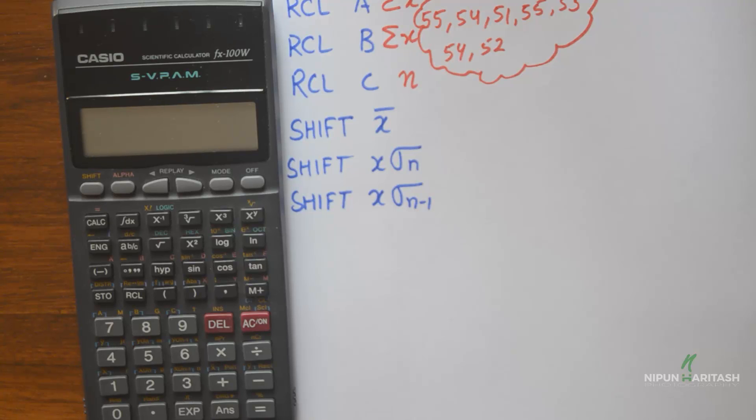We can find summation of x squared, summation of x, the number of samples, and then we can find out standard deviation.